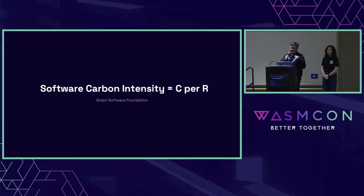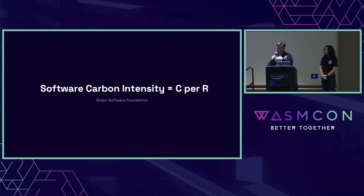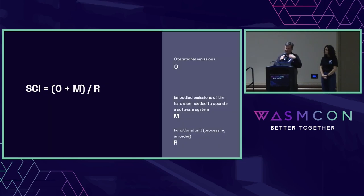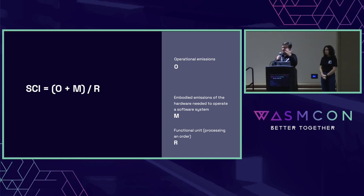So how do we measure this? From the Green Software Foundation, the software carbon intensity is simply the amount of carbon divided by R, where R is the functional unit — meaning something like processing an order, some unit you're running your software. Now let's break up the carbon part. M here is the emissions of building the chip and hardware itself — all the carbon that is already embedded when it comes into the data center. Your software is charged for how often you use it and for how long. And we already went through what R is.